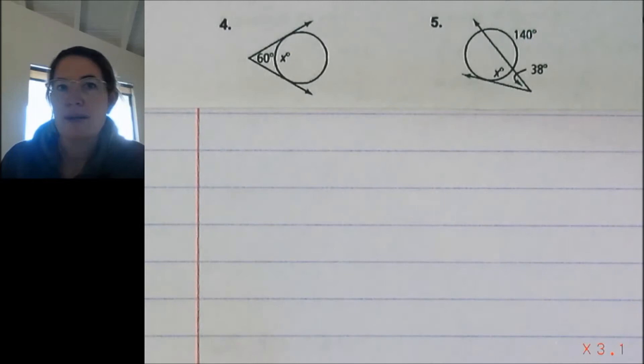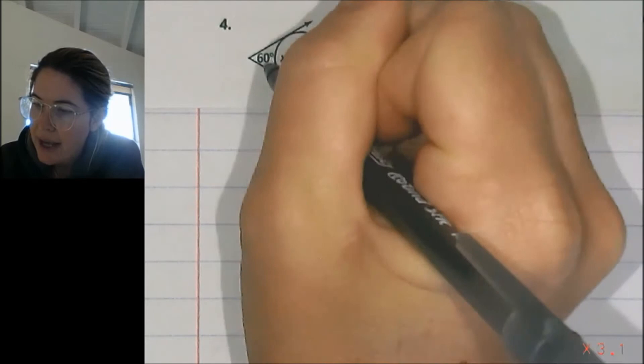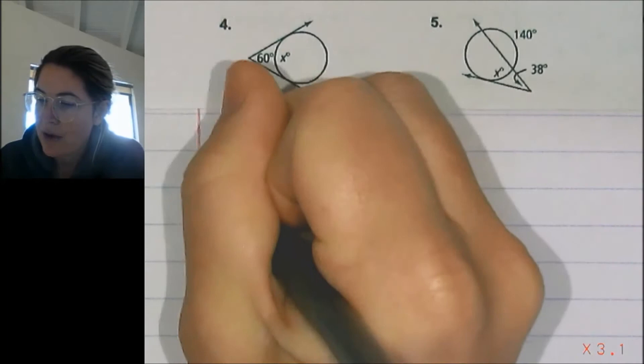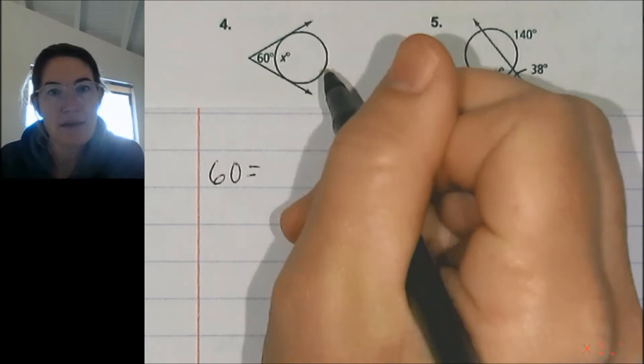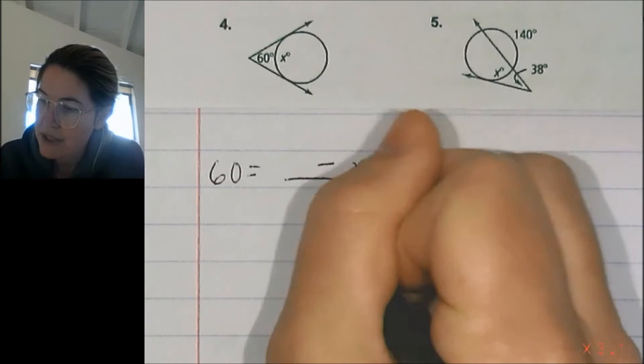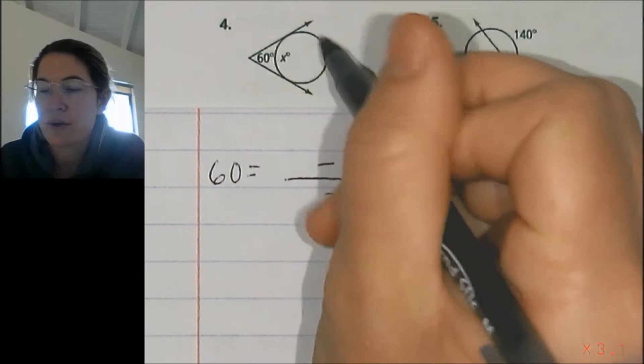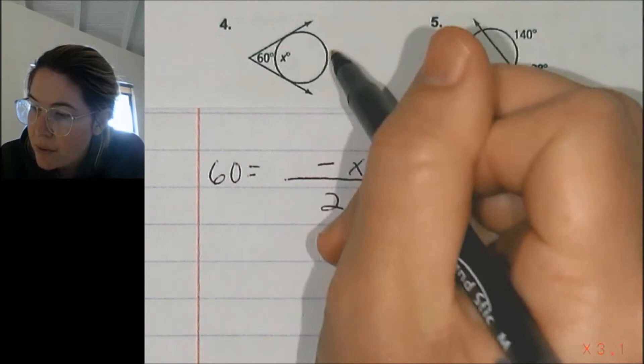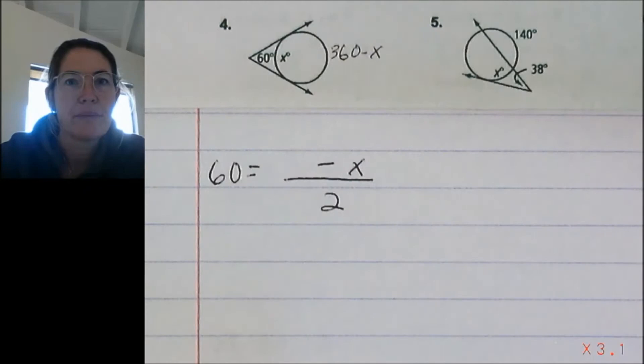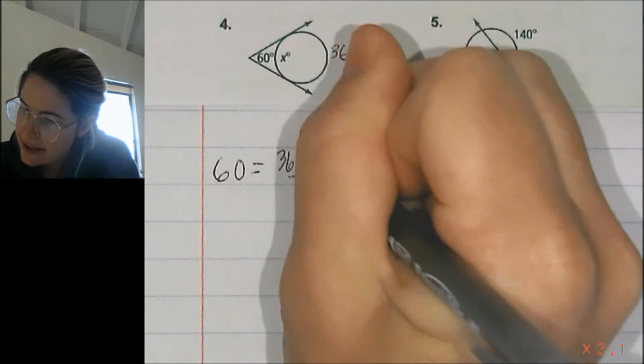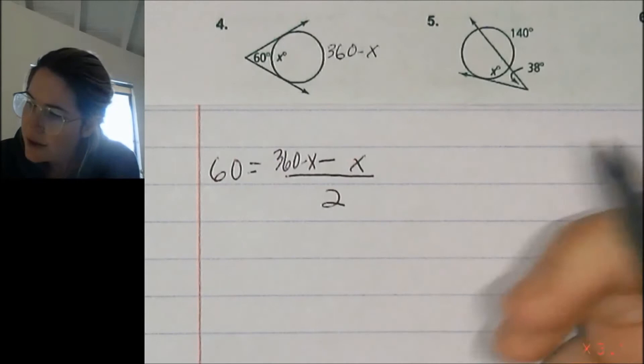Number four requires a little more thinking. We have x as this arc, and an angle formed by two lines intersecting outside. So that angle formed is equal to the big arc minus the small arc x, divided by 2. I don't know the big arc, but the whole circle is 360 degrees, so the big arc will be 360 minus x. So we have: 60 equals (360 minus x minus x) over 2.